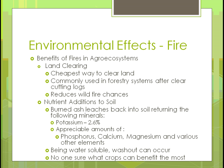The nutrient additions to the soil: burned ash leaches back into the soil, returning potassium at a rate of about 2.6%. Appreciable amounts of phosphorus, calcium, magnesium, and other trace elements would be put back into the soil. Being water soluble, washout can occur, so there is the possibility of leaching of some of these elements. No one is really totally sure which crops would benefit the most — there hasn't been enough research to know that.